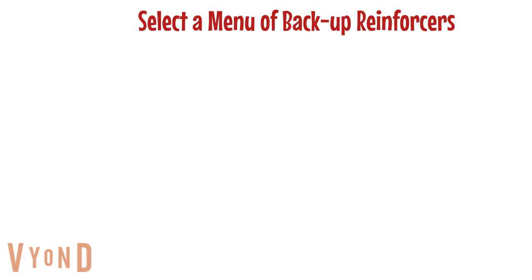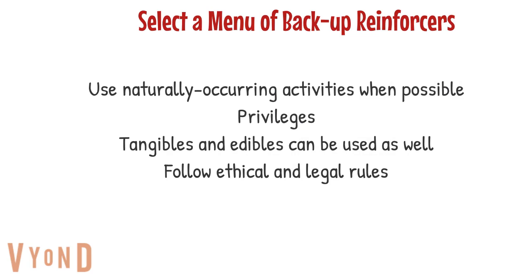The next part of a token economy is to select a menu of backup reinforcers. When selecting backup reinforcers, try to use naturally occurring activities as much as possible — things like privileges or things they'll make contact with in their environment. You can also use tangibles and edibles, often starting with those before moving to activities or privileges. Make sure you're following all ethical and legal rules — you're not depriving them of basic needs, as those are their rights.